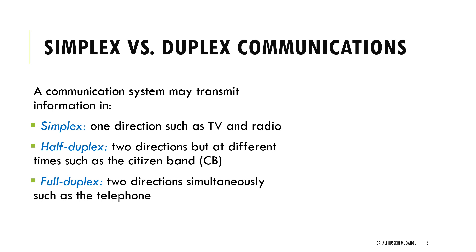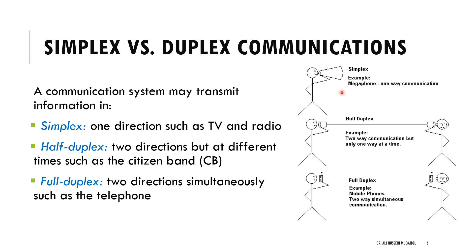Let's conclude this first session by defining the difference between simplex and duplex. We have simplex, half duplex, and full duplex. A communication system is called simplex when it's one direction only — like TV broadcasting or radio broadcasting. If somebody is holding a horn and just shouting, that's a one-way communicator: simplex.